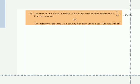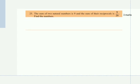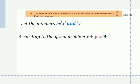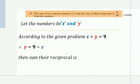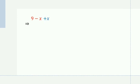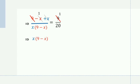Question 25: The sum of two natural numbers is 9 and the sum of their reciprocals is 9/20. Find the numbers. Let the numbers be x and y. Sum of the numbers: x + y = 9, so y = 9−x. Sum of the reciprocals: 1/x + 1/(9−x) = 9/20. Taking LCM as x(9−x), we get 9 / (x(9−x)) = 9/20, so x(9−x) = 20.